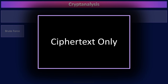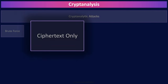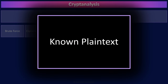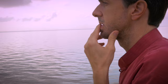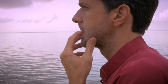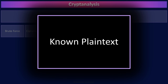In ciphertext-only attacks, the cryptanalyst only has ciphertext to work with to try and deduce the key. Accordingly, ciphertext-only attacks are very difficult. Known plaintext attacks means the attacker has access to both the ciphertext and the associated plaintext. The attacker is using the plaintext and the associated ciphertext to try and deduce the encryption key used. Once the attacker has the key, they can decrypt all other messages and even forge new messages.